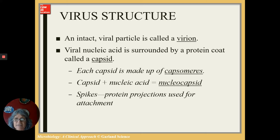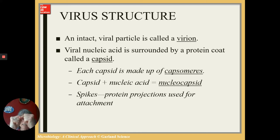Viral structure: one intact viral particle is called a virion. A virion is made of a nucleic acid — either DNA or RNA, single-stranded or double-stranded — surrounded by a protein coat. That complete coat is called the capsid. Each capsid is made up of capsomeres: individual proteins that come together in a very specific arrangement to form this outer coat. The capsid plus the nucleic acid are called the nucleocapsid.